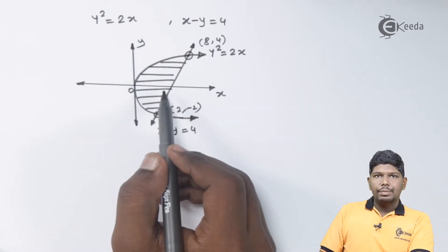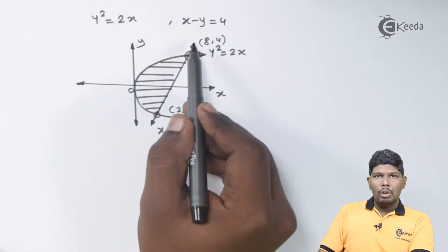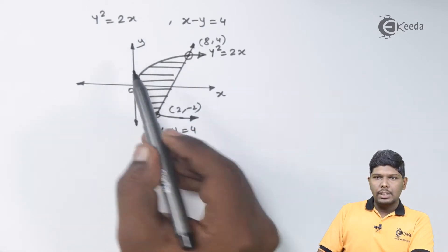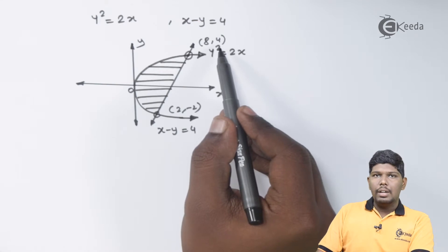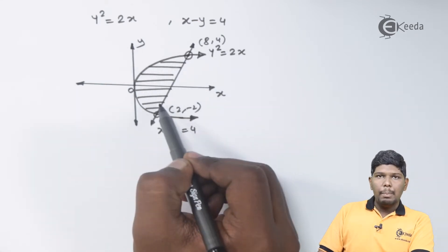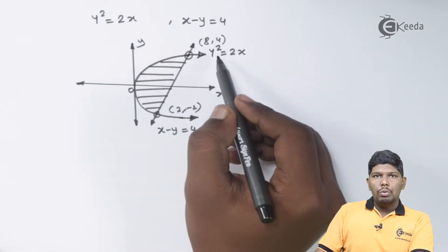The area between the parabola and the line will be the shaded region. Now to find this area, we can find the area of this line with respect to y-axis from -2 to +4 and further subtract the area under the parabola from -2 to 4.